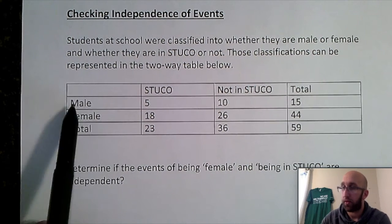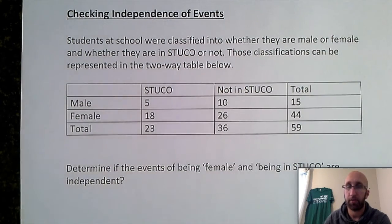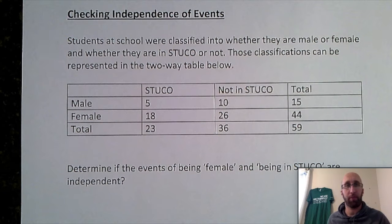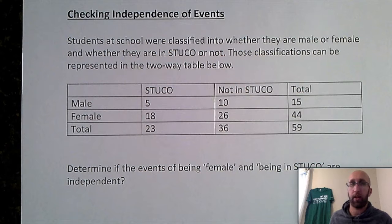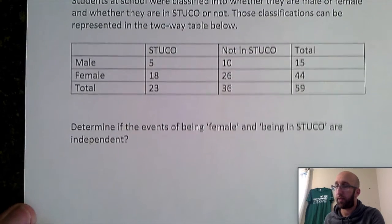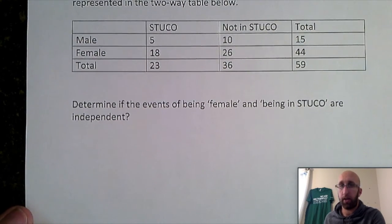Those classifications can be represented in the two-way table below. So there's all my males, my females, STUCO, and non-STUCO. If you haven't seen my video on how to do probabilities with a two-way table, I recommend watching that before doing this one because there are some probabilities that I'm not going to spend a whole lot of time on in this problem because it's kind of understood you should know how to do those already. So determine if the events of being female and being in STUCO are independent.